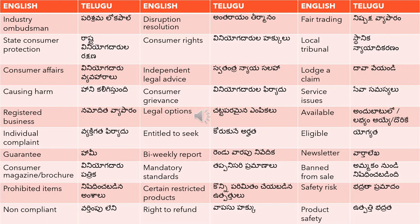'Banned' means 'nishaydhinchabadindi'. 'Prohibited' can also be translated as 'nishaydhinchabadindi' — for example, 'prohibited items' means 'nishaydhinchabadina vastuvulu'. So both 'prohibited' and 'banned' can be translated as 'nishaydhinchabadindi'.